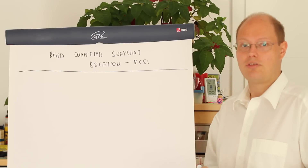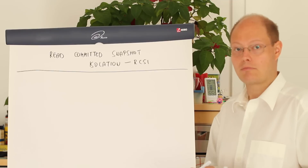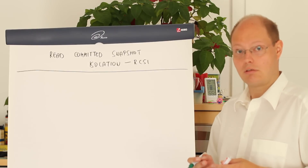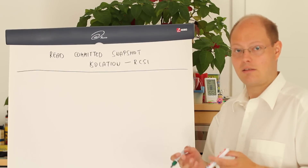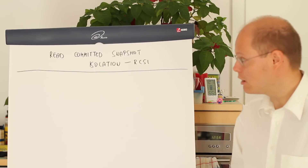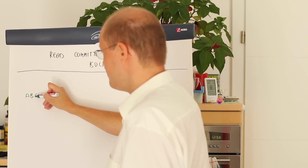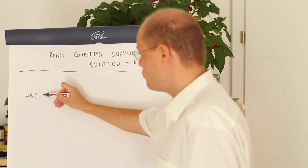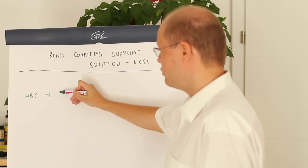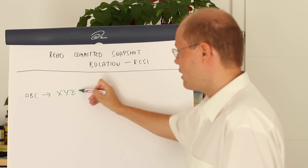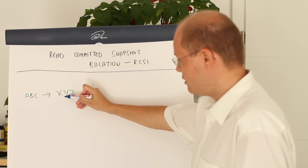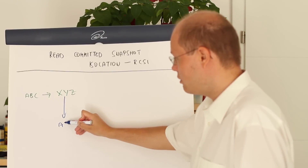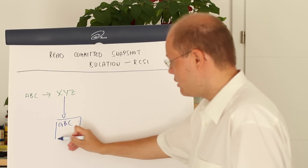Let's switch now over to the flipchart where I want to describe this isolation level in more detail. The idea behind optimistic concurrency is that a reader — a select statement — doesn't acquire a shared lock anymore. Imagine we have values A, B, C in our database and we have an update transaction which changes those values to X, Y and Z. When this happens, the update statement copies the old committed values of A, B, C into the version store.